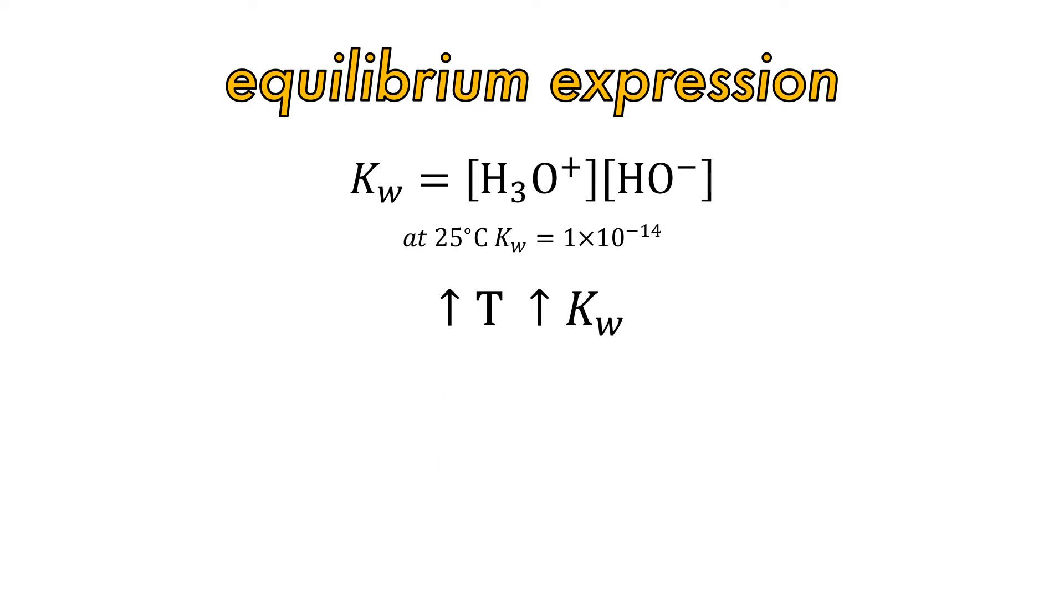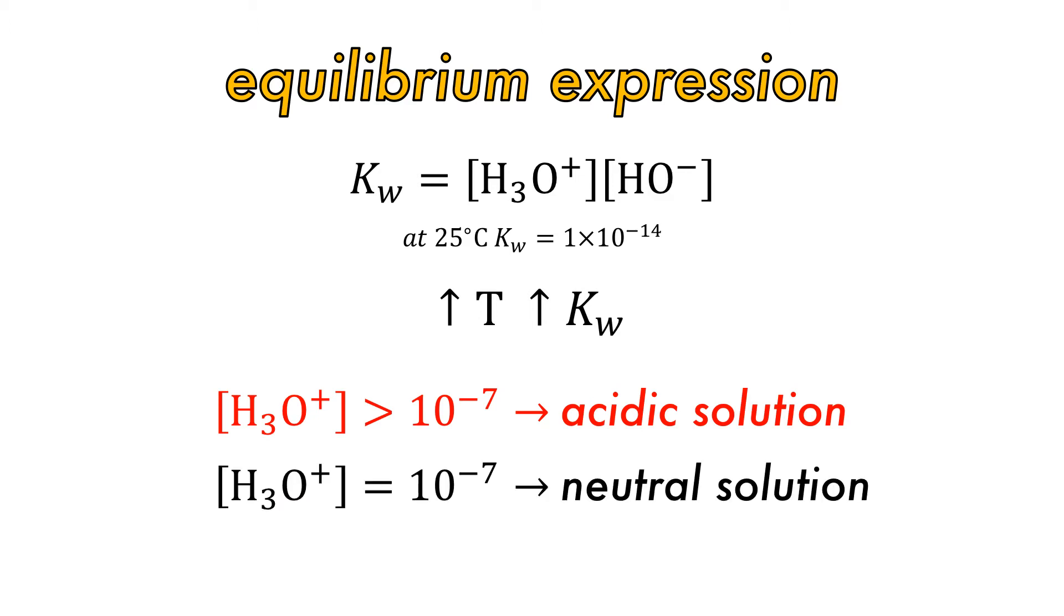If the proton concentration is above 10 to the minus 7, then the solution is said to be acidic. If it is equal to 10 to the minus 7, then the solution is neutral, and basic if the concentration is below 10 to the minus 7.